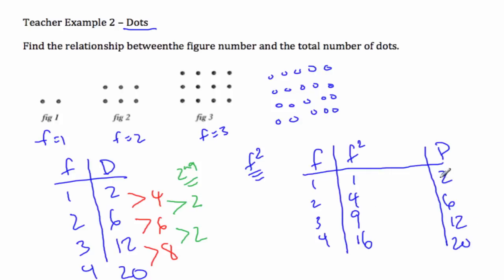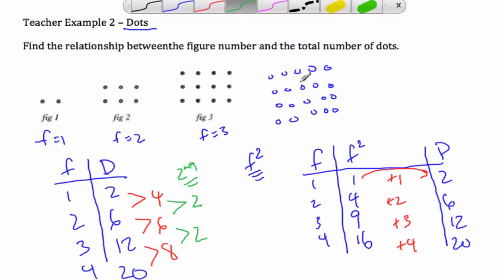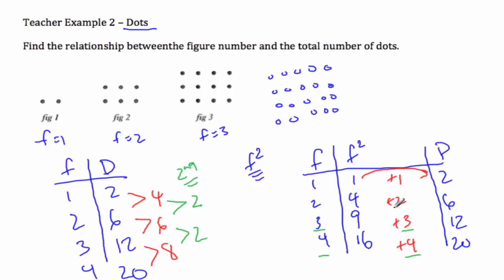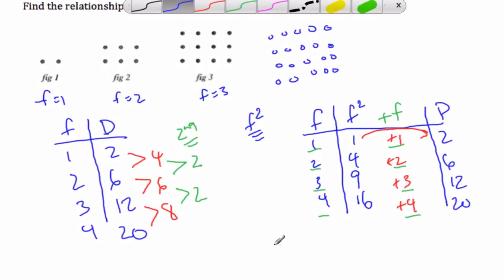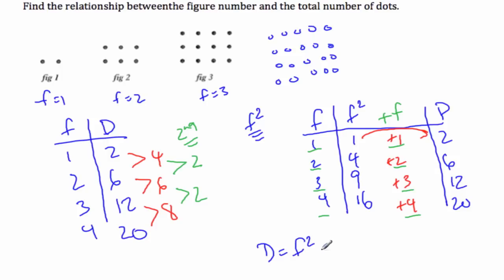I'm thinking about how do I go from one to two? And from four to six? And from nine to twelve? It looks like we could add one for the first one, then we're adding two for the second one, adding three for the third one, and adding four for the fourth one. So all these added values are the same as f. It looks like I am taking f squared and adding f. So let's propose this as our rule: d is equal to f squared plus f.